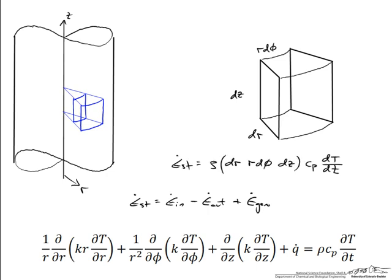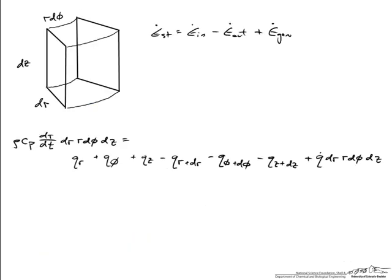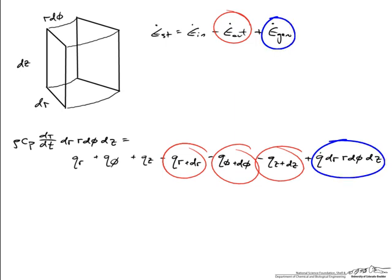And finally, the rate at which thermal energy is being stored is proportional to the heat capacity and the rate the temperature is changing. So we take the mass, or the density, times this volume dr times R d phi dz. Density times the volume is a mass multiplied by the heat capacity times the rate at which the temperature is changing. So here I've written it all out - the energy stored term, the energy coming in, the energy coming out through the other three faces, and then the energy being generated.